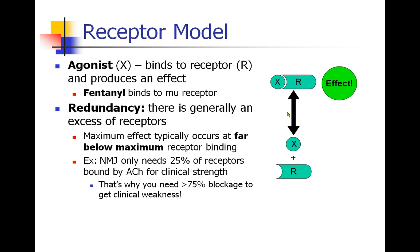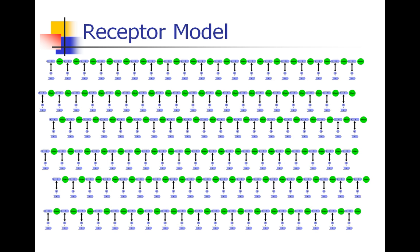Of course, there isn't just one receptor but millions and millions of receptors. Each one of these receptor-agonist pairs is in rapid equilibrium between bound and unbound. And we're looking at the average of this whole system in order to determine whether we're getting the effect or not getting the effect.